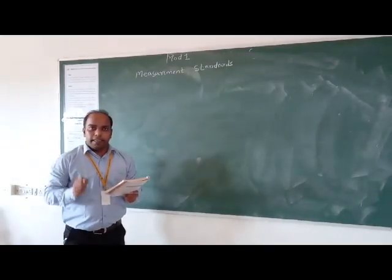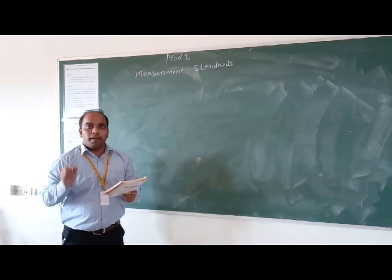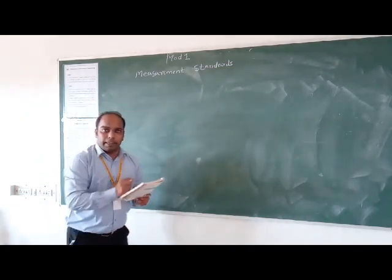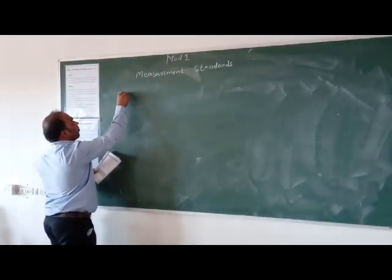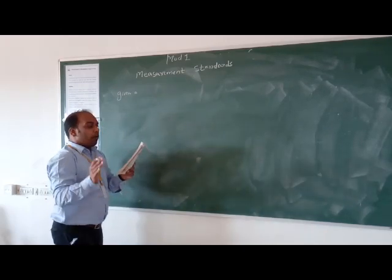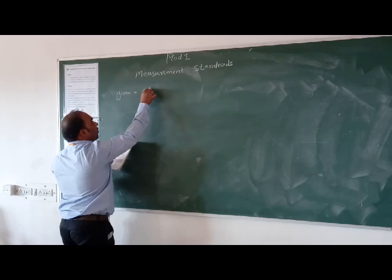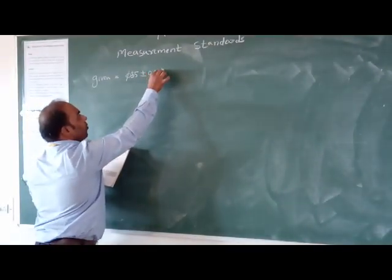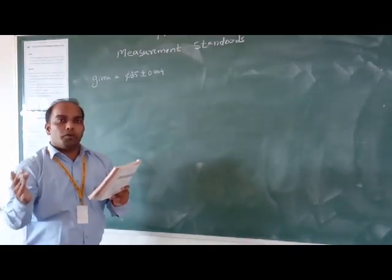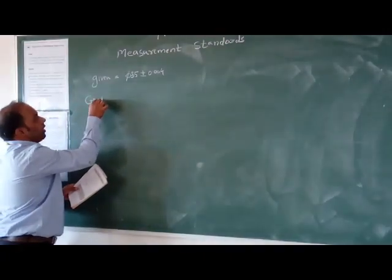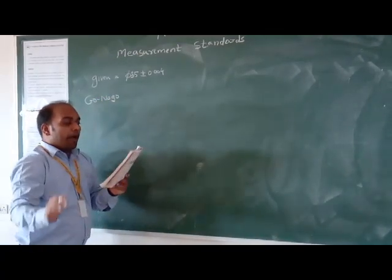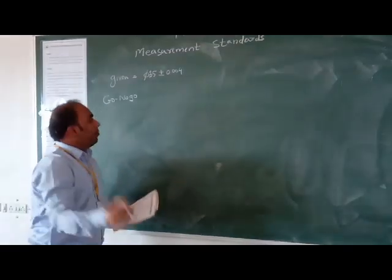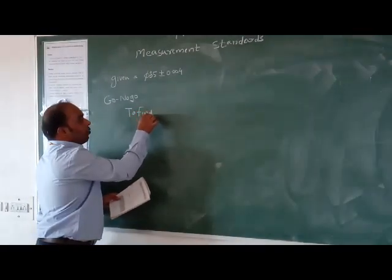Hello friends, in today's lecture we are going to see an example related to design of go gauge and no-go gauge. The given data is: a hole of 35mm diameter with tolerance limit of plus minus 0.004 is to be generated by means of a go/no-go gauge. Design the dimensions of the gauge required.